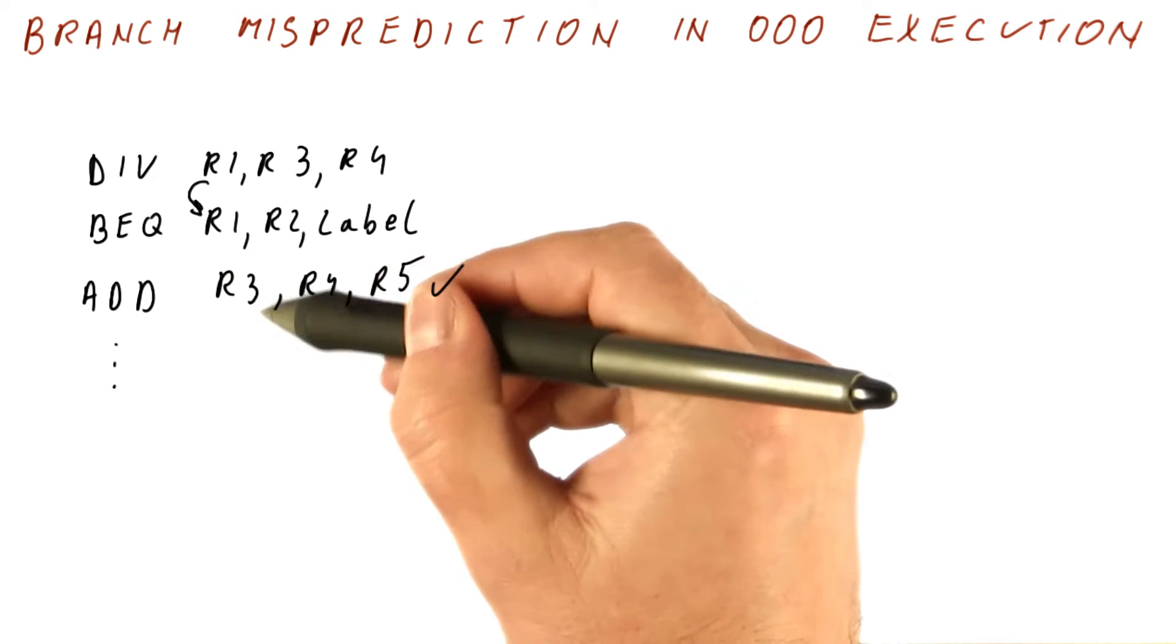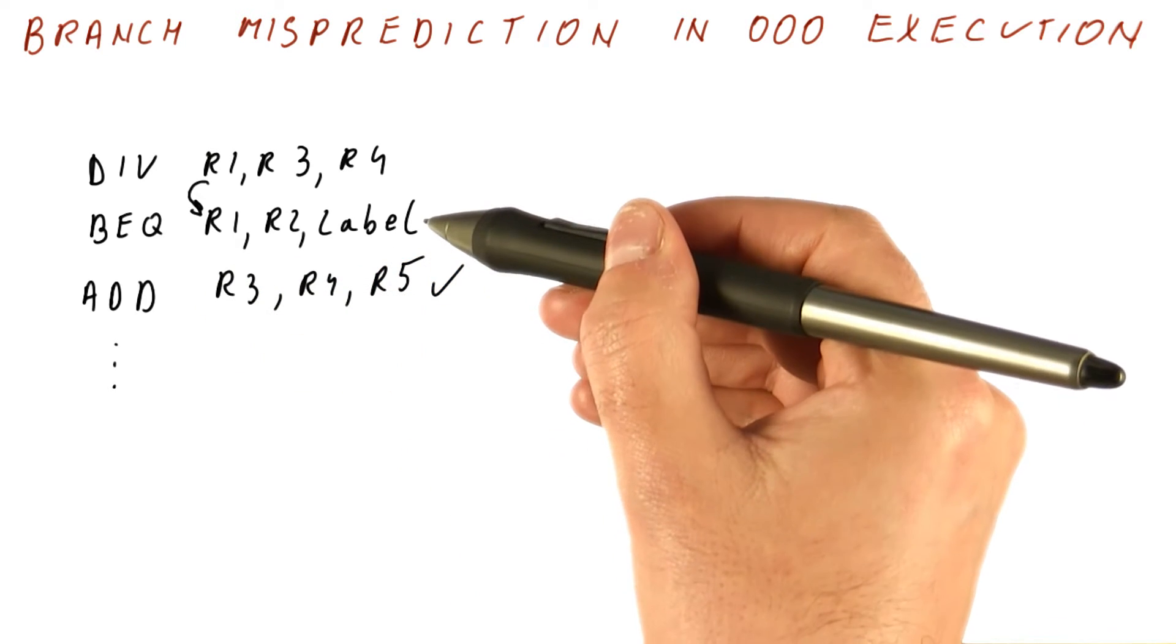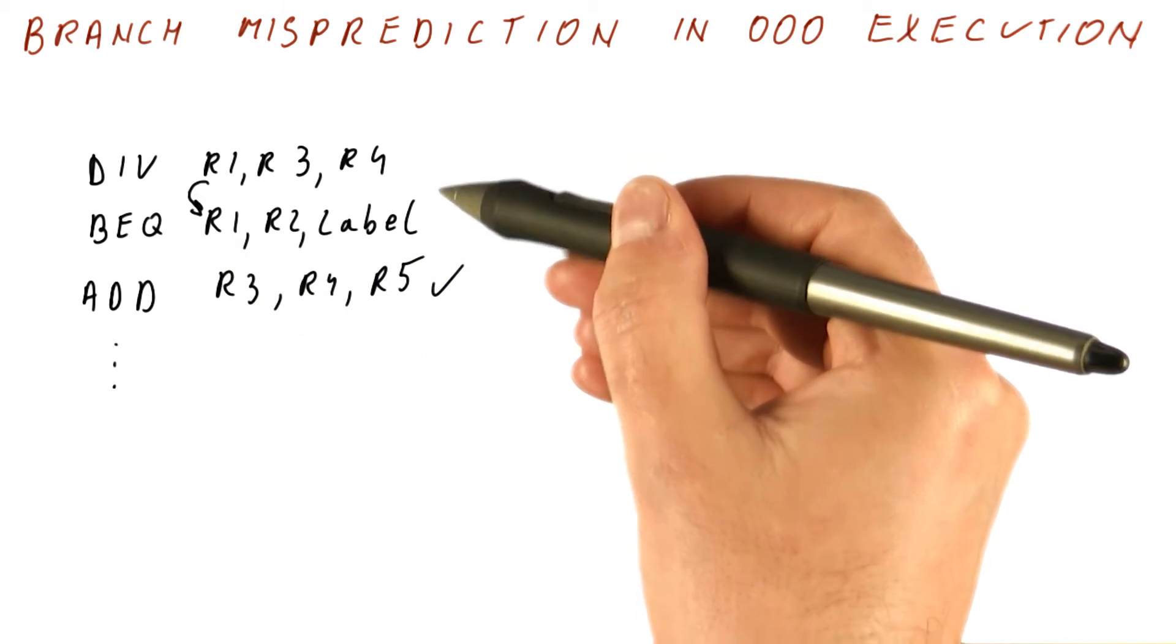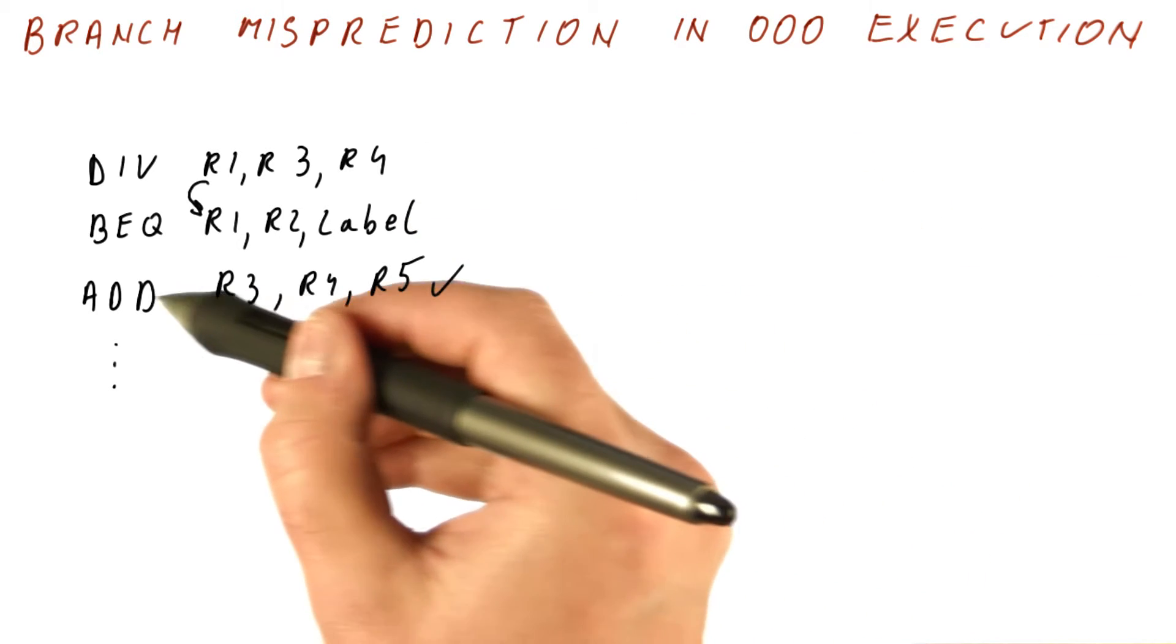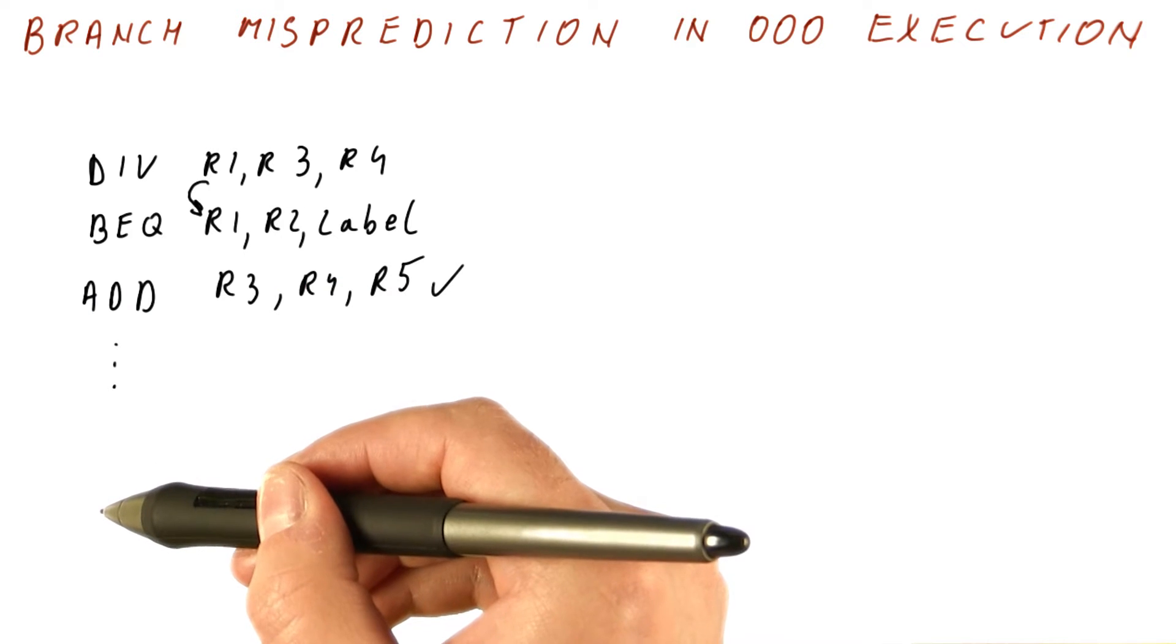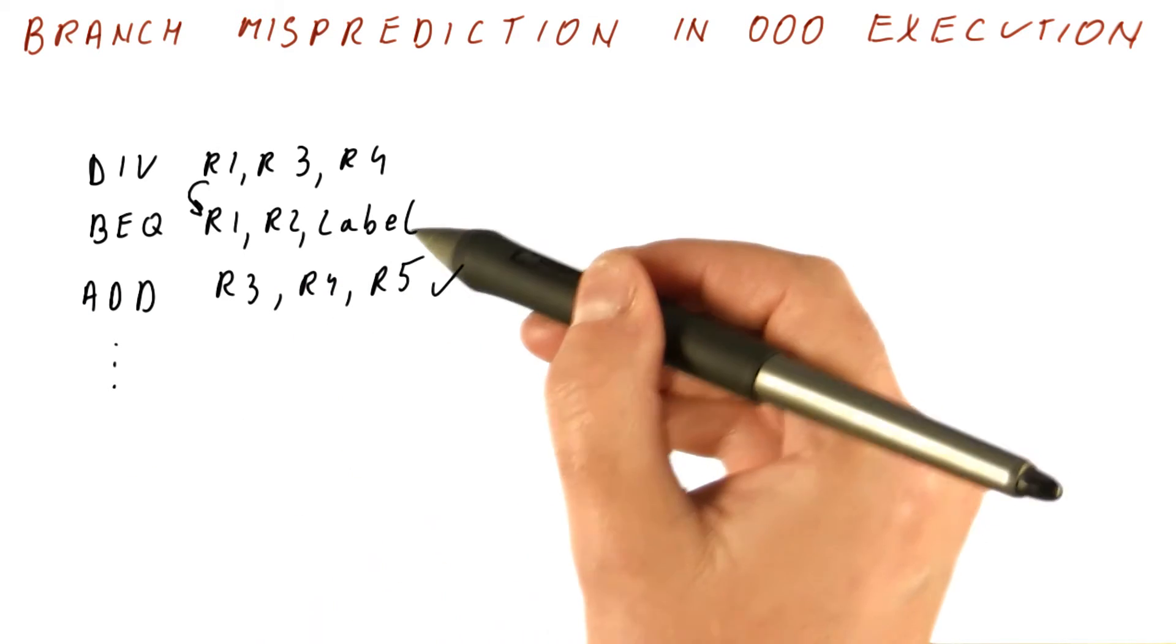In that case, R3 is already written. Once we realize that we have mispredicted this branch, possibly 40, 50 cycles later, we should behave like we have never executed this instruction and instead start fetching instructions from the label that the branch is pointing to.